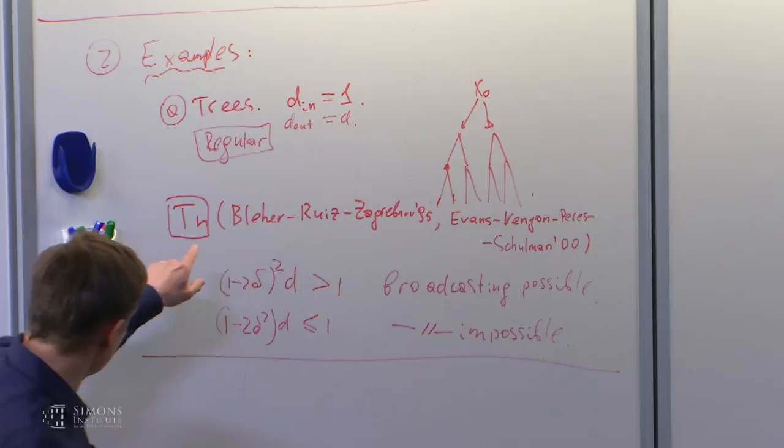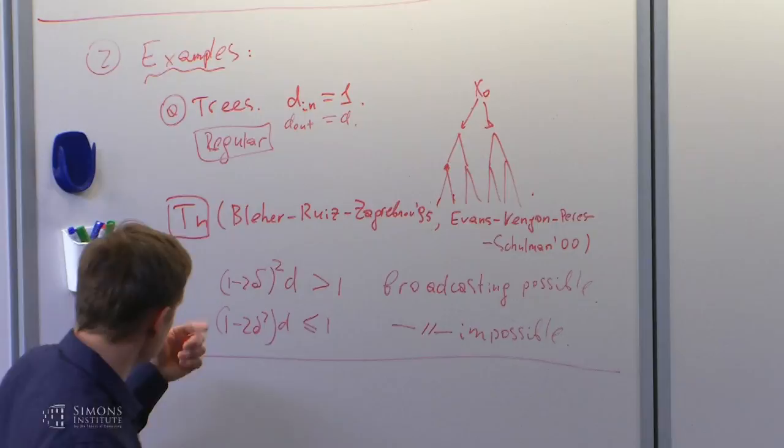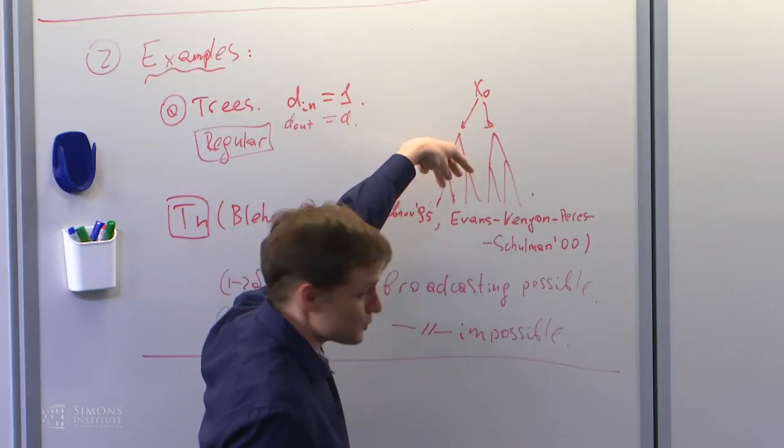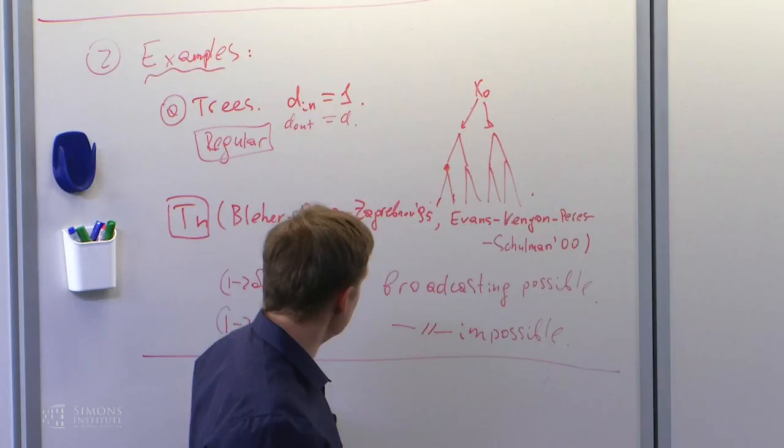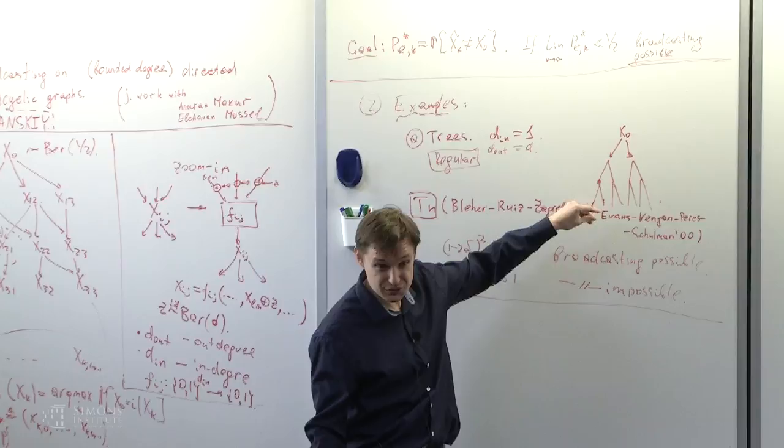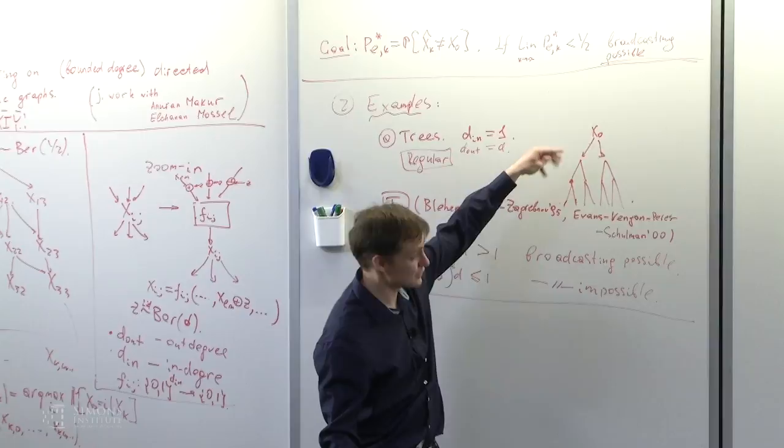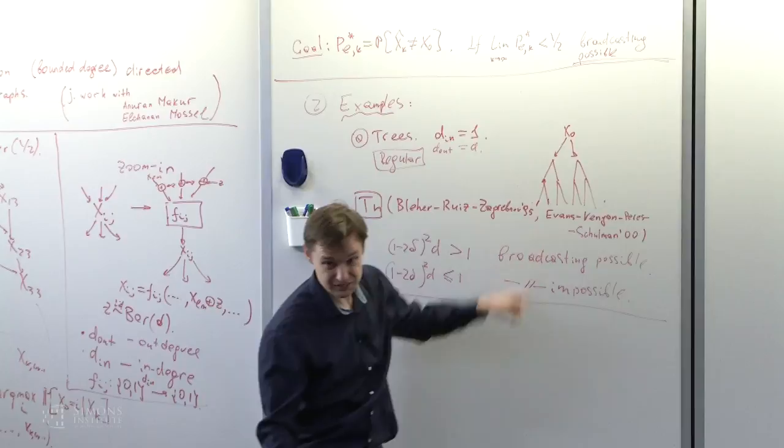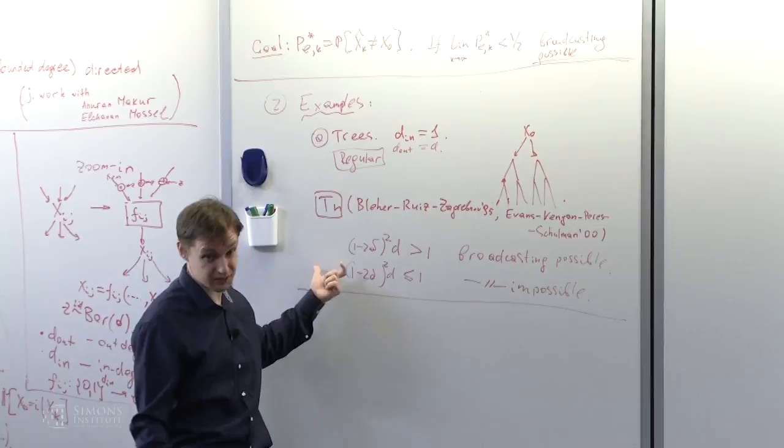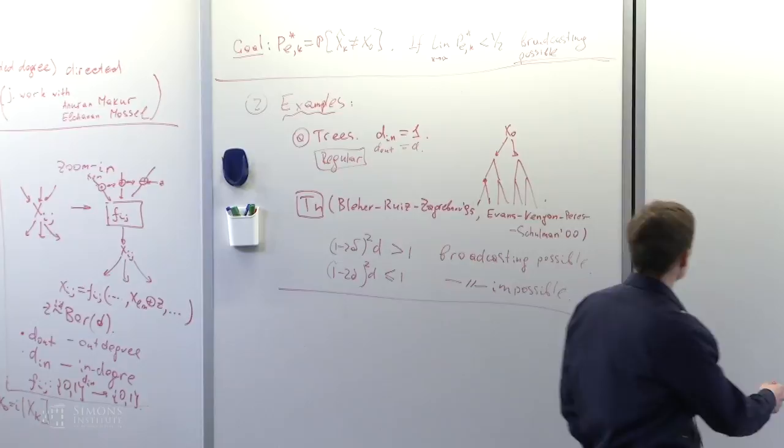What did they prove? A beautiful result. For a regular d-ary tree, if (1-2δ)²d is strictly greater than 1, then broadcasting is possible. If (1-2δ)²d is less than or equal to 1, then impossible. Very nice exact characterization covering all cases.